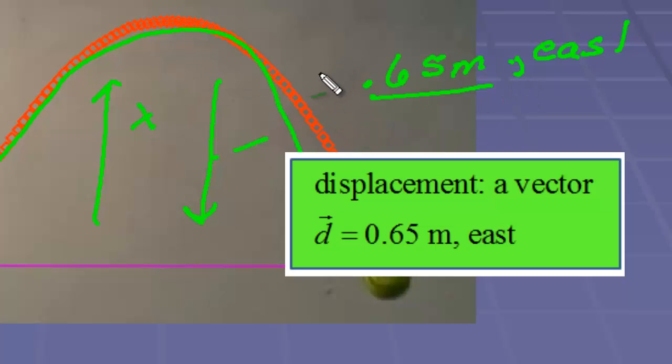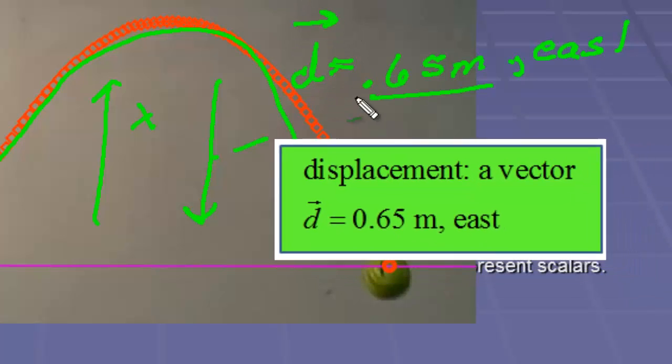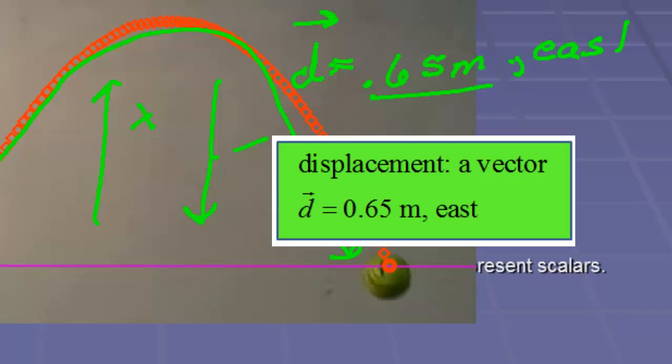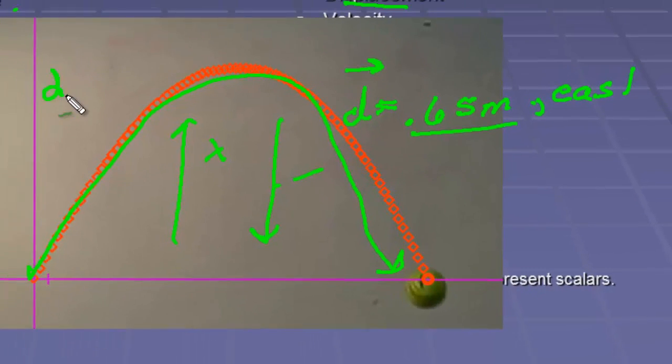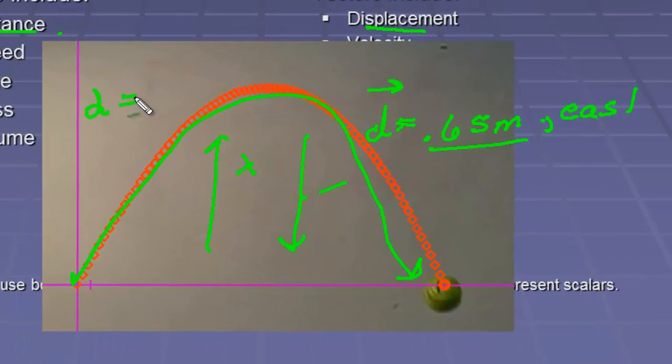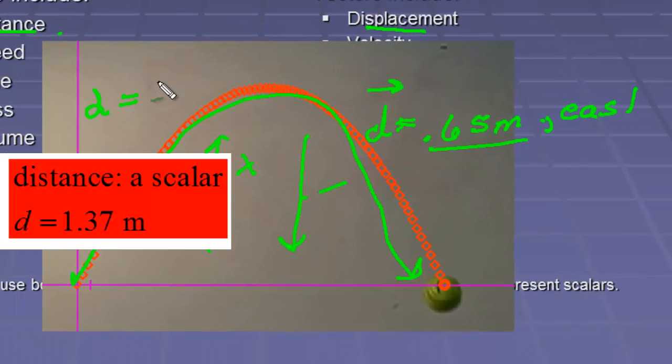And we would show that with a D, and the D generally has an arrow over it, and that D means displacement. With direction, or distance, we would just have a D without the arrow over it, and that would be that total distance traveled, our 1.37 meters. There's no direction associated with it.